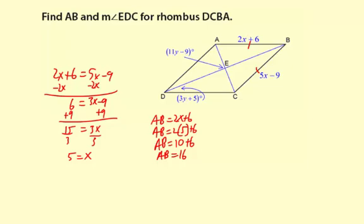So that solves for AB. We just used the idea that rhombuses have four congruent sides. Next we need to look at angle EDC. That's this angle.